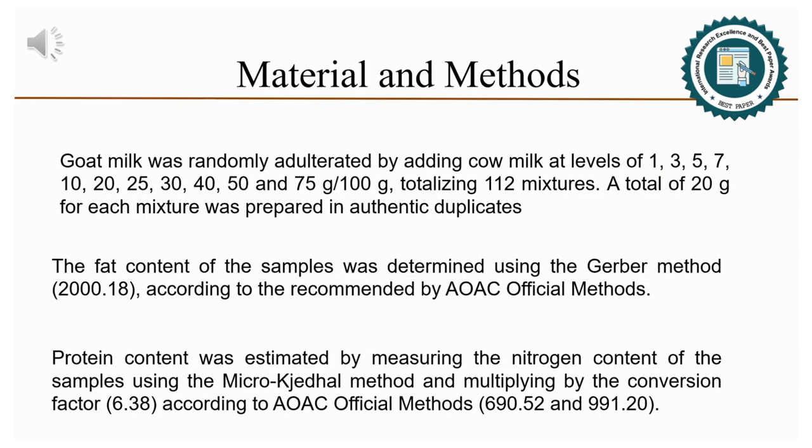Goat milk was randomly adulterated by adding cow milk at levels of 1, 3, 5, 7, 10, 20, 25, 30, 40, 50, and 75 grams per 100 grams, totalizing 112 mixtures.